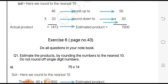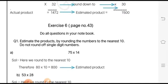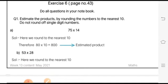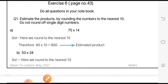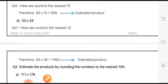All the questions are to be done in the notebook. Question number one goes like this: estimate the products by rounding the numbers to the nearest tens. Do not round off the single digit numbers - they are kept like that. Here you can see 75 into 14 is to be multiplied, and the estimated product is to be found. 75 is rounded up to 80 and 14 is rounded down to 10. You are very much familiar with how rounding off is done, so 800 is the estimated product.